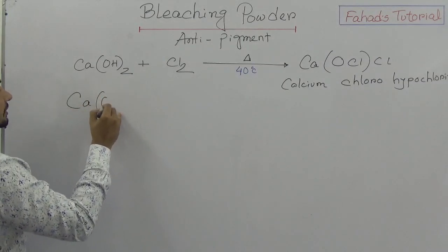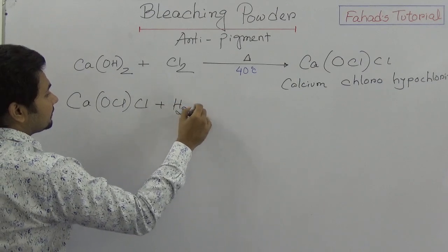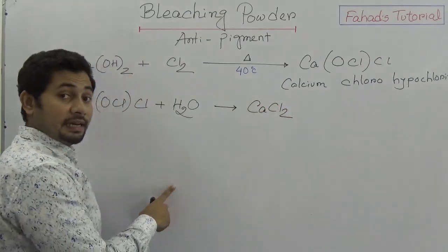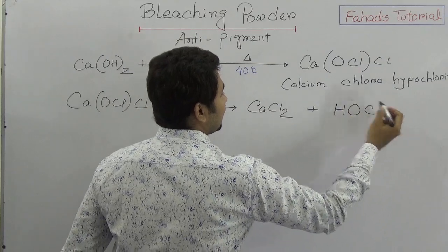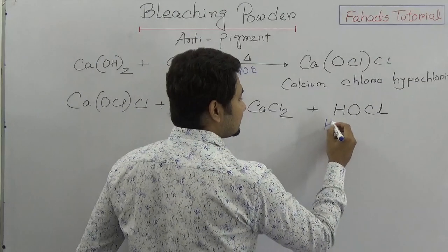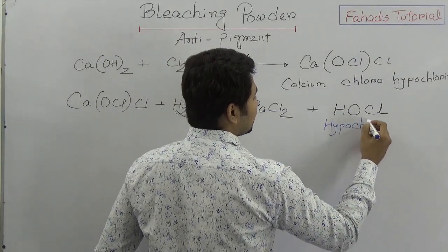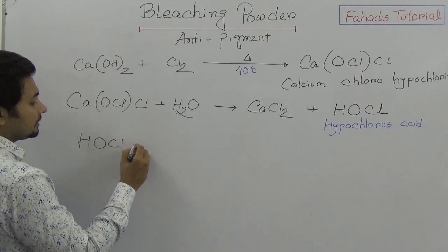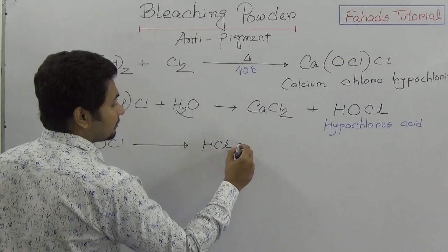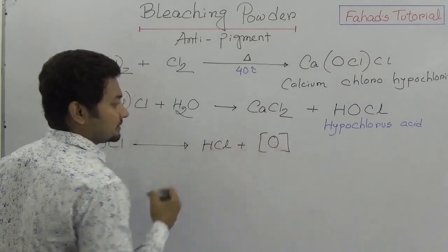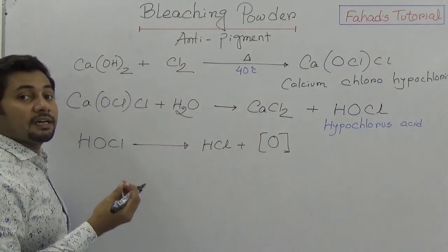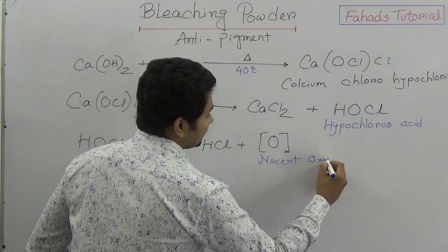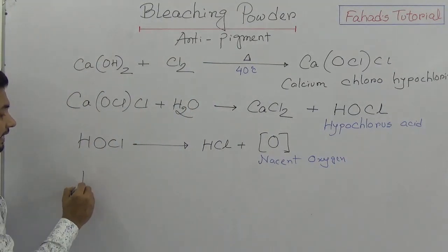When bleaching powder is mixed with water, it produces calcium chloride and hypochlorous acid. This hypochlorous acid then breaks down into hydrogen chloride and nascent oxygen. Nascent oxygen is simply a single oxygen atom — this is called nascent oxygen.